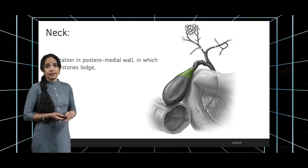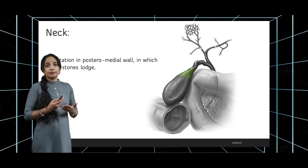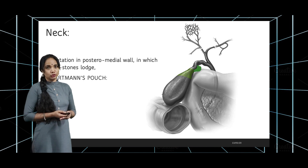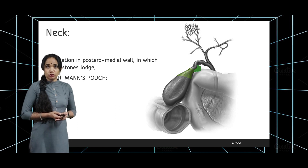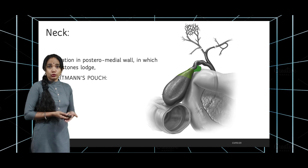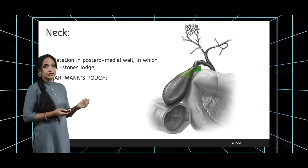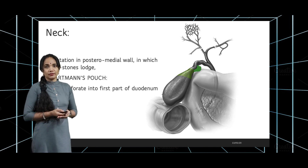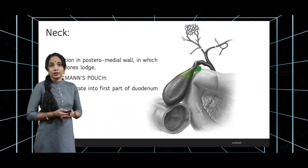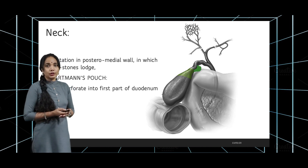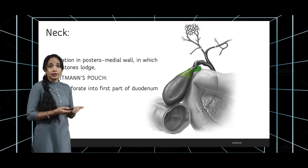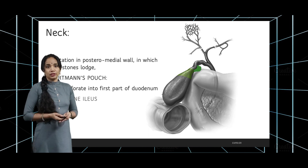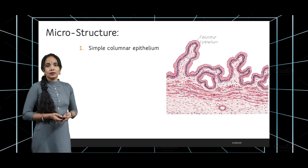The neck is the narrow end of the gallbladder which continues as the cystic duct. Sometimes in pathological states there may be a posteromedial dilation in the neck called Hartmann's pouch, which may lodge gallbladder stones. These stones might perforate into the first part of the duodenum, resulting in gallstone ileus, as the gallstone erodes into the duodenum and passes down into the small intestine.